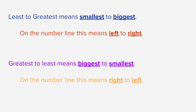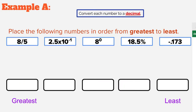Let's see this in practice by taking a look at Example A. It says place the following numbers in order from greatest to least, so we're going to find the biggest number first and work our way to the least. We have a tip that says we're going to convert each number to a decimal. We need to make sure they're all the same form because we've got fractions, scientific notation, percents, decimals — a lot of different things — so we need them all to look the same in order to compare them.